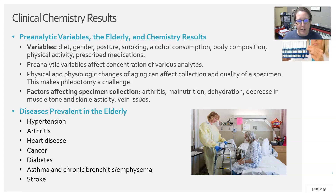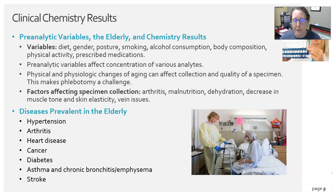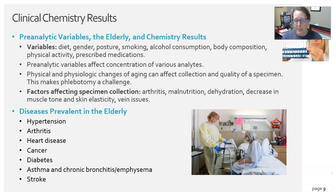Phlebotomy can be a challenge in geriatric patients. Arthritis may make it hard for a patient to fully extend their arm for antecubital vein access, requiring puncture at the back of the hand with risk of trauma and vein blowing. Patients are also subject to malnutrition and dehydration, which lowers blood volume and makes blood collection harder. Decreased muscle tone, skin elasticity, and vein issues mean veins can roll around, making it like chasing them with a needle.